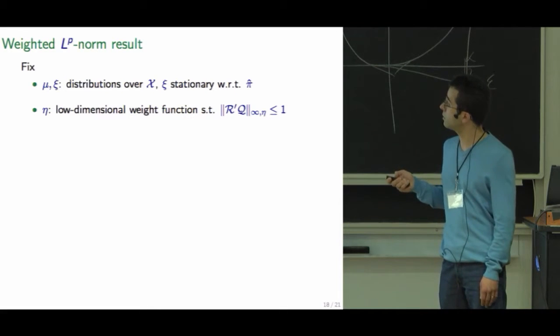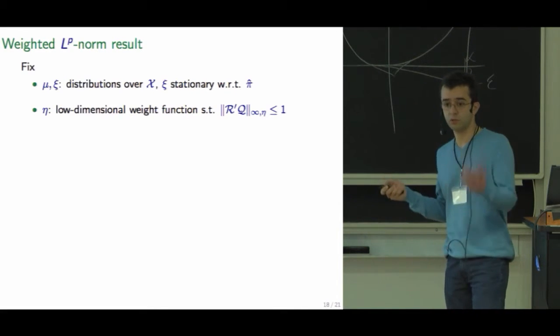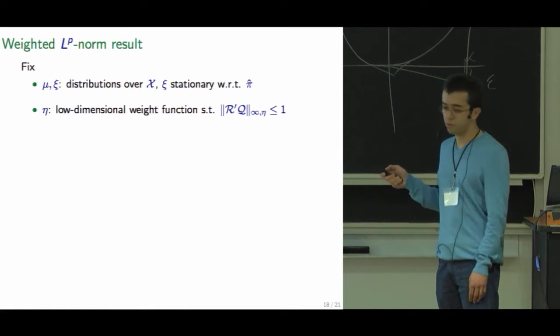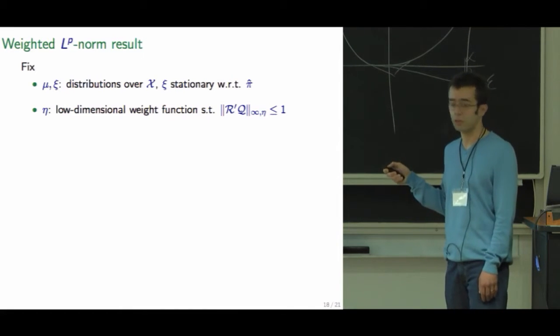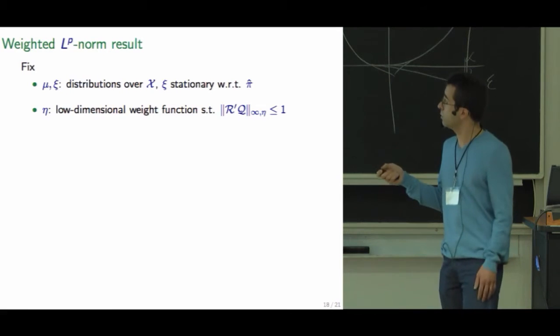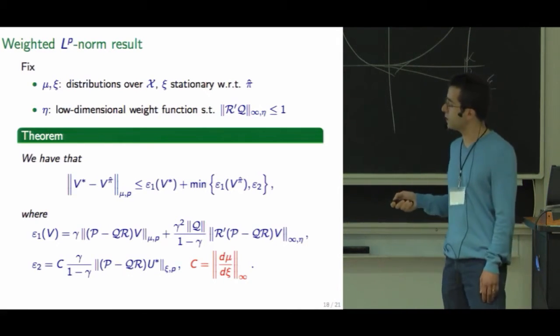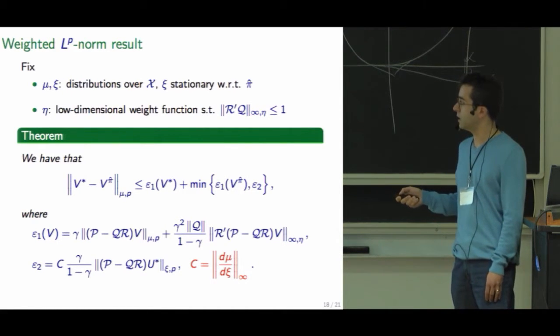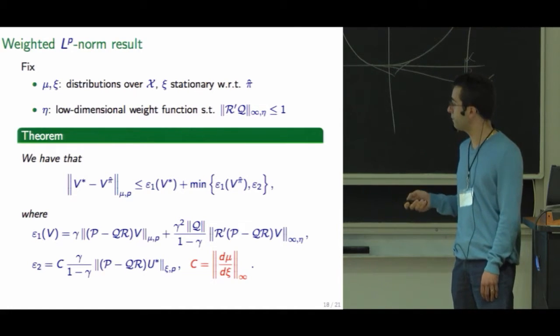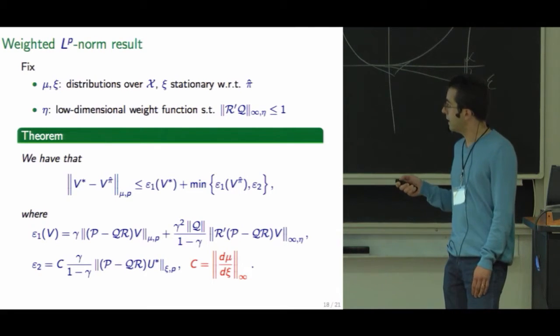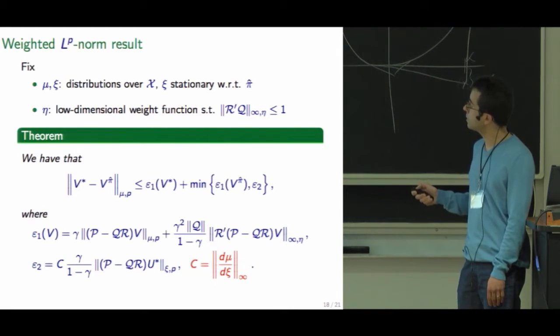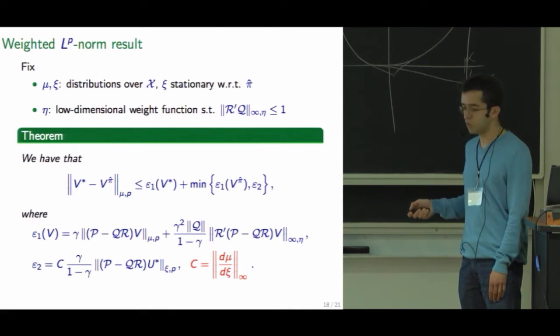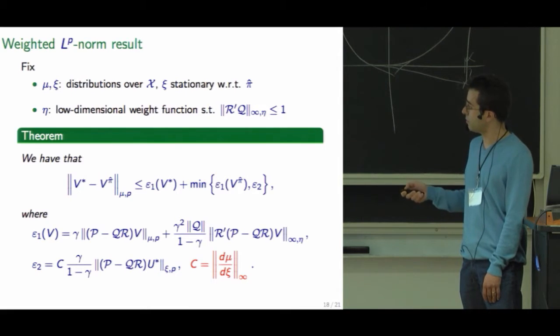So we can fix mu to be the weight distribution for the norm of the high dimensional space. You can choose whatever you want, for example, initial state distribution. Psi will be stationary with respect to pi hat. And again, we're going to impose a constraint on the weighted supremum norm. It seemed more sensible than taking the constraint on a weighted LP norm on the low dimensional space. We get more or less the same thing as we had in the other result, except that here we don't have any a posteriori term as an alternative to epsilon one v star. This epsilon two term is going to be terms of this LP norm weighted by the stationary distribution. We have this sort of concentrability coefficient going on here. The good thing about this bound is that even if C is unbounded, our bound is not vacuous.